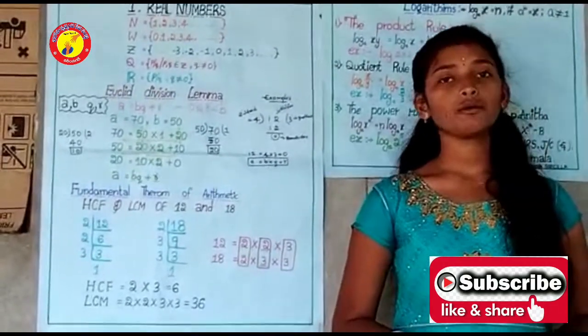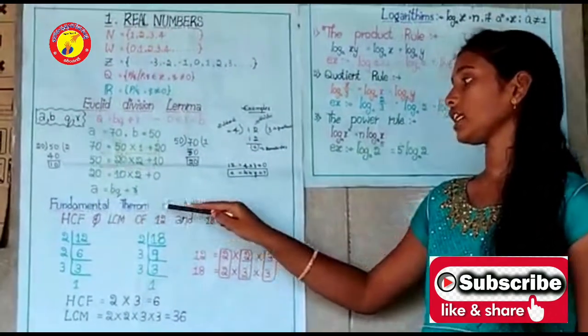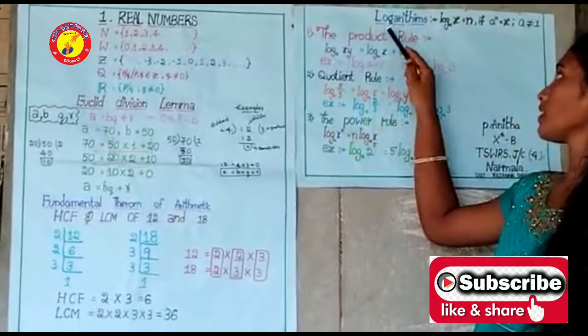In this chapter, we are going to discuss three topics: first, Euclidean division lemma; second, fundamental theorem of arithmetic; and third, logarithms.